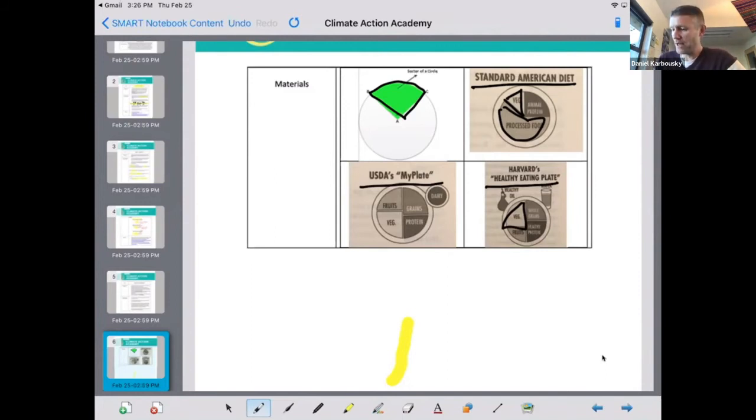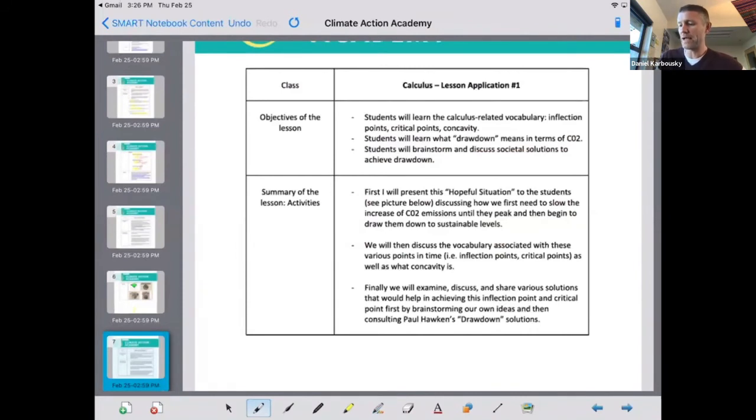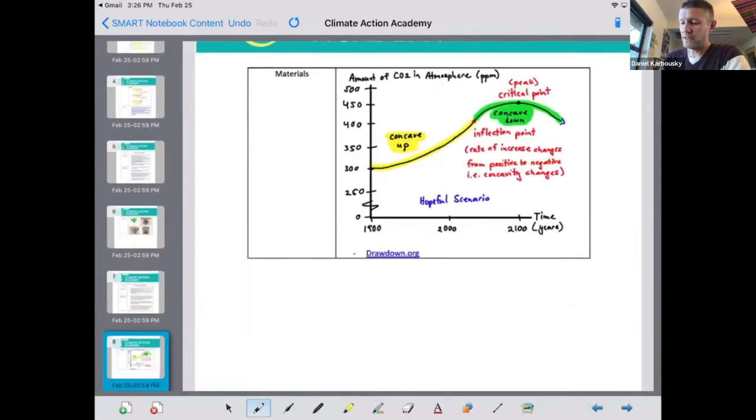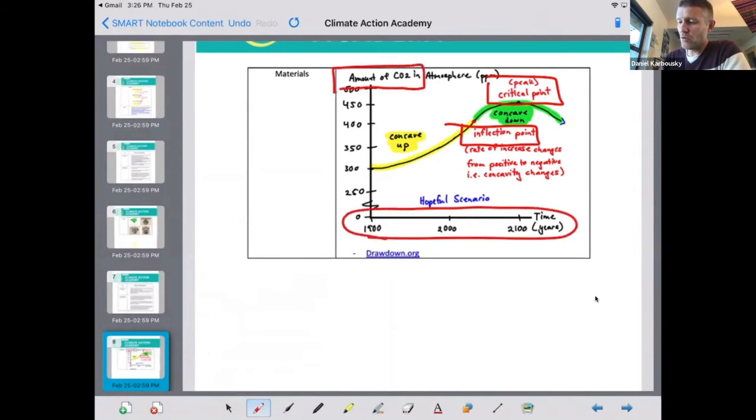The last couple ideas here are more calculus based. So one of them is just simply to get vocabulary across with regard to calculus. And one of those things is that we need to learn words like inflection points and critical points and concavity. And so basically, this graph right here is the amount of carbon dioxide in the atmosphere over time. And so what is happening right at the moment is that the amount of carbon dioxide is going up, but not only is it going up, but it's going up at an increasing rate.